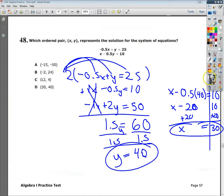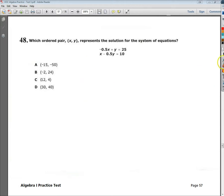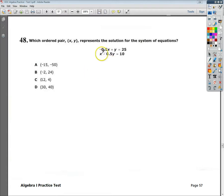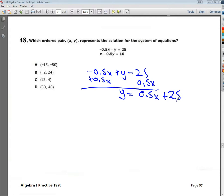Now we'll do method 3, substitution. Substitution involves me putting one of these in terms of one of the variables. So what I'm going to do is take the top one and put y by itself. I'm going to do plus 0.5x, so y equals 0.5x plus 25. Which essentially means any time I write the letter y in an equation, I could just write it as 0.5x plus 25 if I wanted to. So I'm going to go into the bottom one and write x minus 0.5, and instead of writing y, I'm going to write 0.5x plus 25.